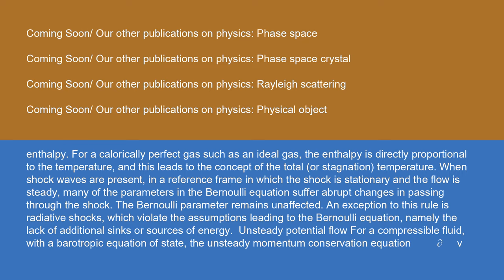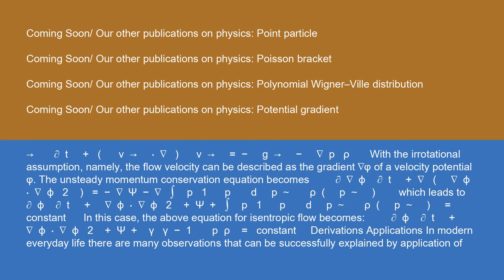For unsteady potential flow of a compressible fluid with a barotropic equation of state, the unsteady momentum conservation equation, with the irrotational assumption — namely that the flow velocity can be described as the gradient ∇φ of a velocity potential φ — becomes: ∂(∇φ)/∂t + ∇(|∇φ|²/2) = −∇ψ − ∇∫dp/ρ(p), which leads to: ∂φ/∂t + |∇φ|²/2 + ψ + ∫dp/ρ(p) = constant. For isentropic flow, this becomes: ∂φ/∂t + |∇φ|²/2 + ψ + γ/(γ−1) · p/ρ = constant.